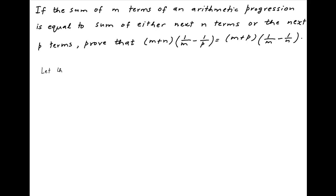Let's assume that the first term of the arithmetic progression is a and the common difference is d. Therefore the arithmetic progression is a, a plus d, a plus 2d, and so on. The mth term is a plus m minus 1 times d, and the m plus 1th term is a plus md.